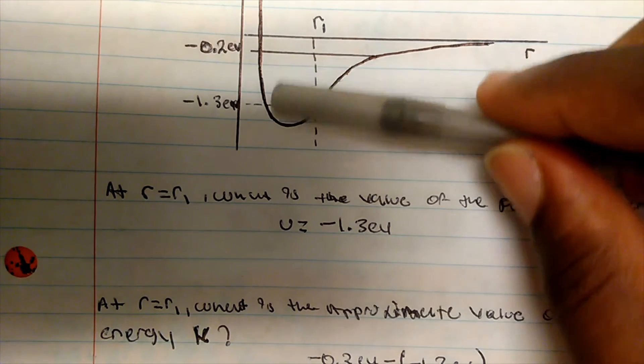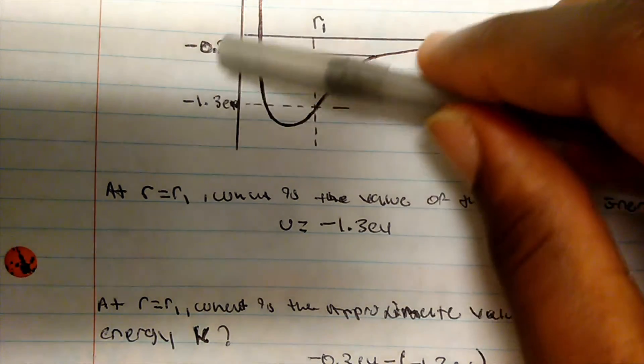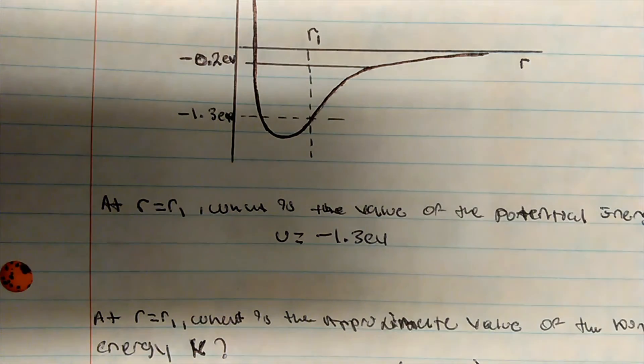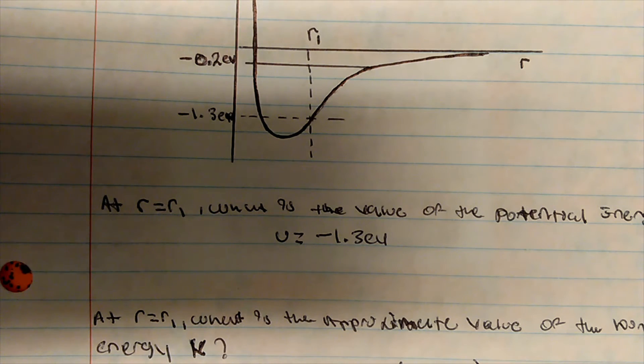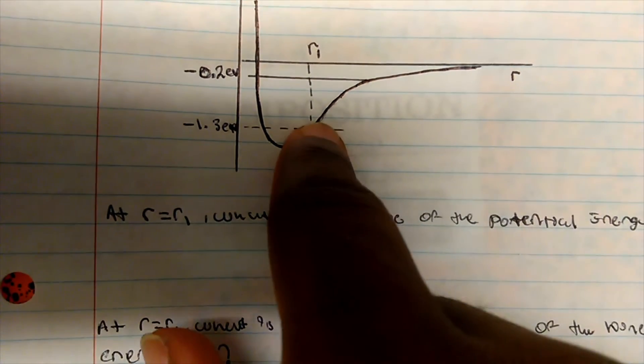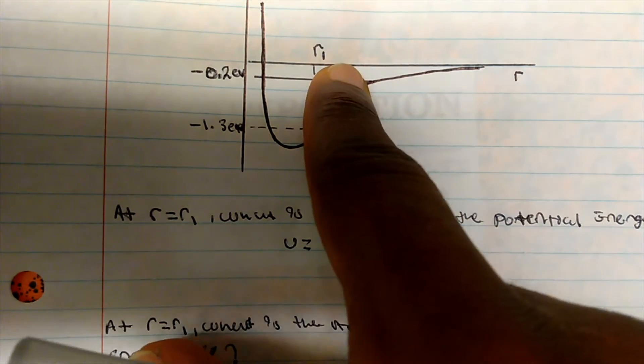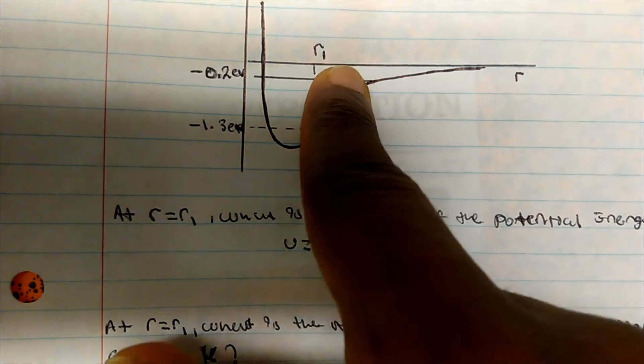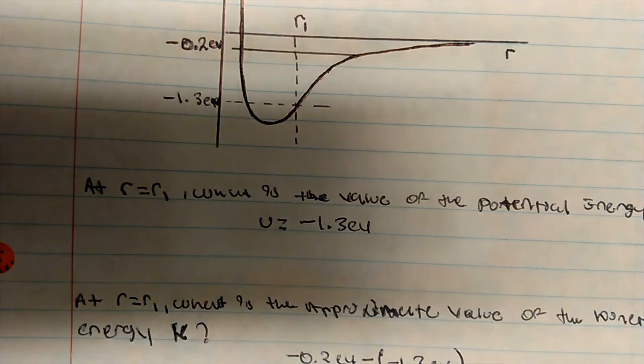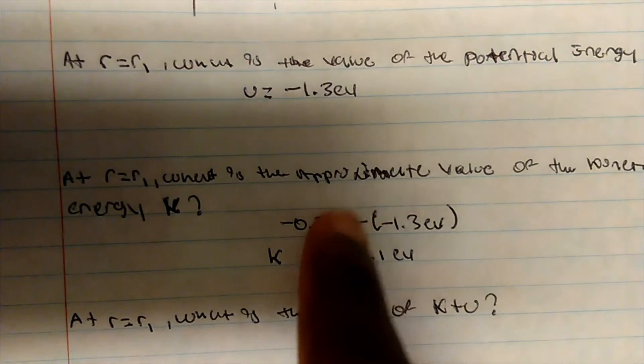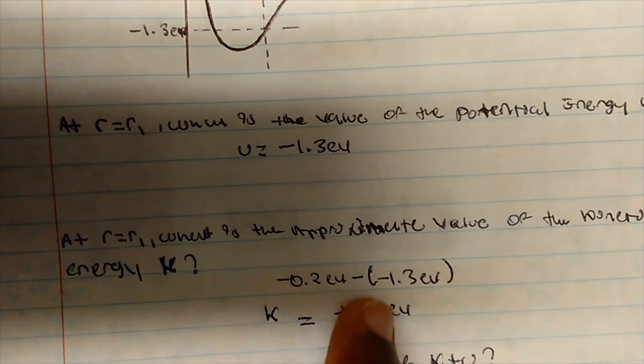Your kinetic energy is always right in between—it's the change from your K plus U line. It's the change from your K plus U line to your potential energy. Remember, it's always the potential plus the kinetic energy that gives us our K plus U line. The change between those values is our kinetic energy.